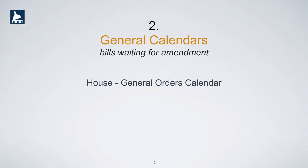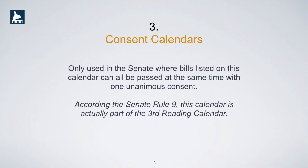Second, bills waiting for amendment are placed on the general calendar, which is also referred to as the general orders calendar. And third, the consent calendars, only used in the Senate, where bills listed on this calendar can all be passed at the same time with one unanimous consent. According to Senate Rule 9, this calendar is actually part of the third reading calendar.